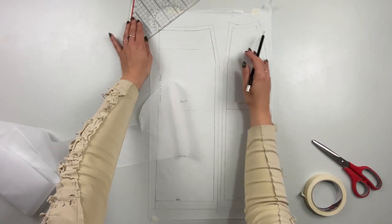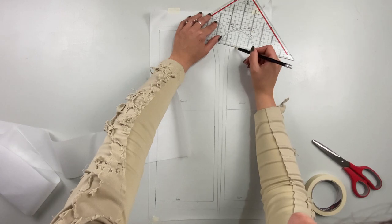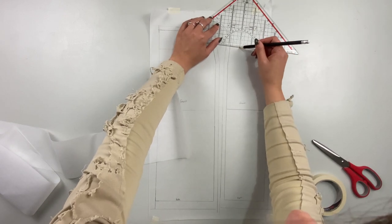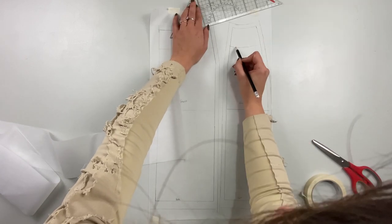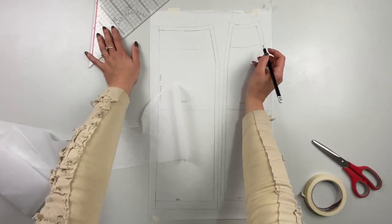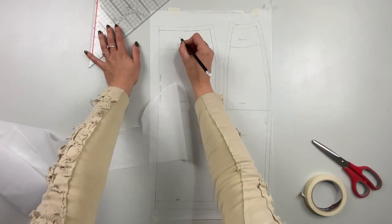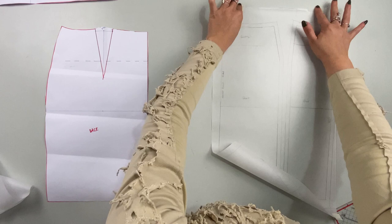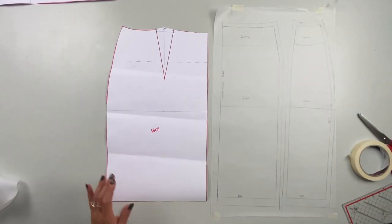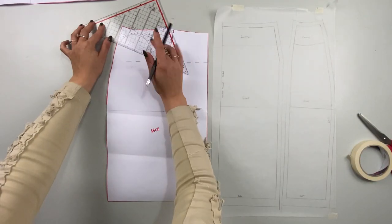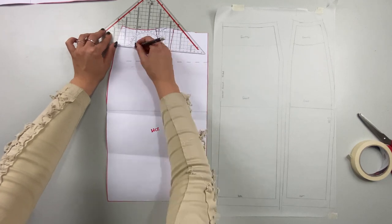This skirt won't have a waistband but a direct facing on the waistline. I decided the facing should be five centimeters deep. I'm using the parallel guidelines from the set square to translate the waistline rounds on the end of the facing five centimeters further down. I marked the area with the word facing so I know later why I put my lines there.